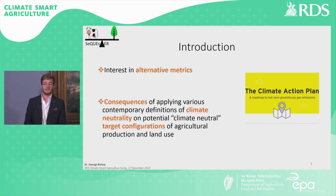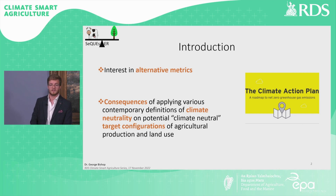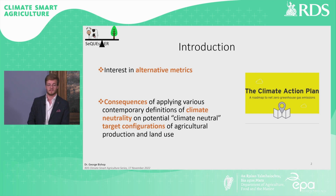The aim of the study was to explore the consequences of applying various contemporary definitions of climate neutrality on potential climate-neutral target configurations of agricultural production and land use.